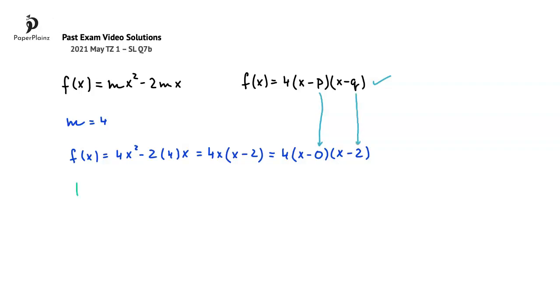Therefore, we can write that p is equal to 0 and that q is equal to 2. Of course, you can also say that p is 2 and q is 0.